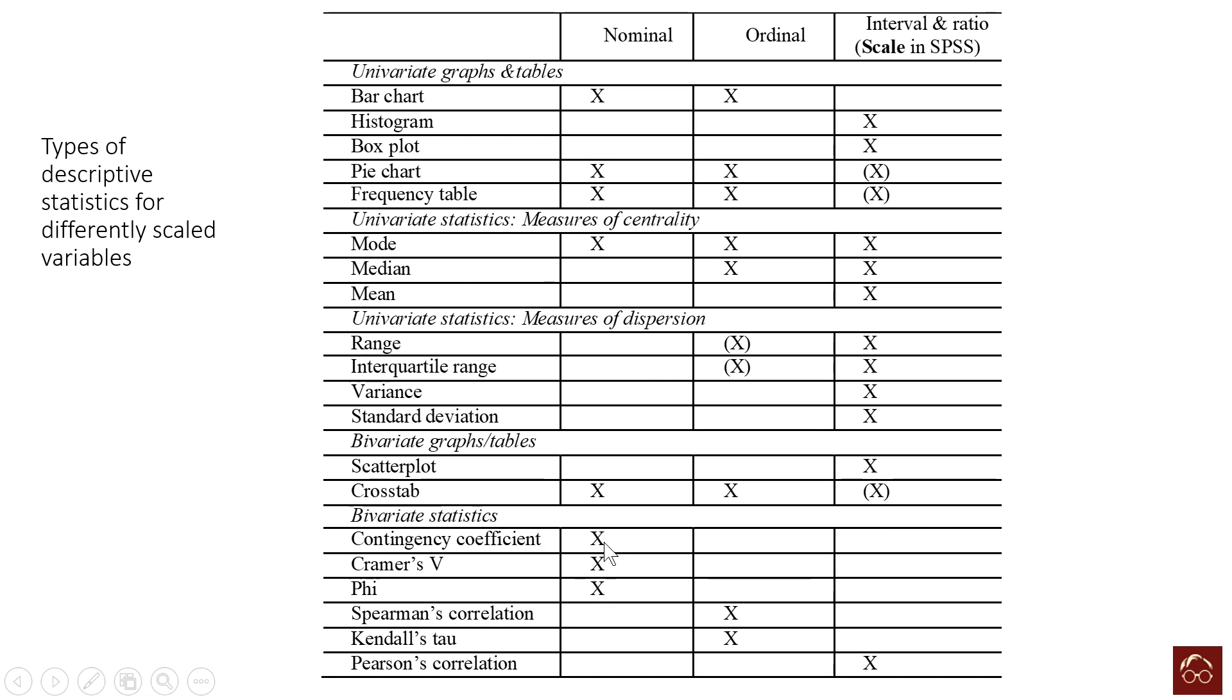For bivariate statistics such as correlations, these are the three types for nominal variables: contingency coefficient, Cramer's coefficient, and phi coefficient. For ordinal we will often apply Spearman correlation and Kendall's tau.